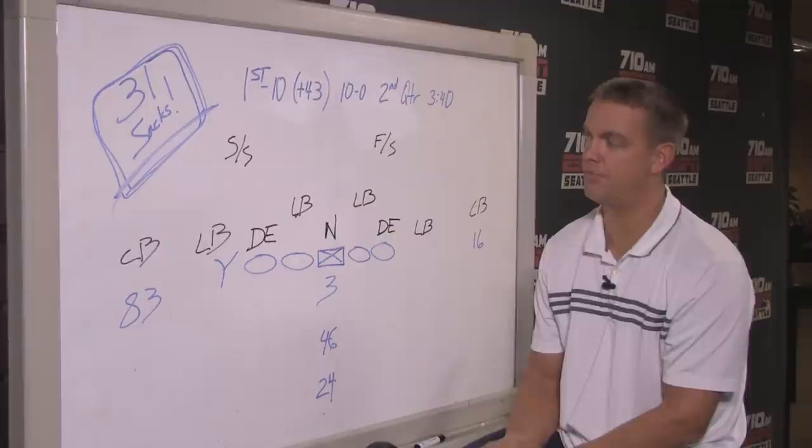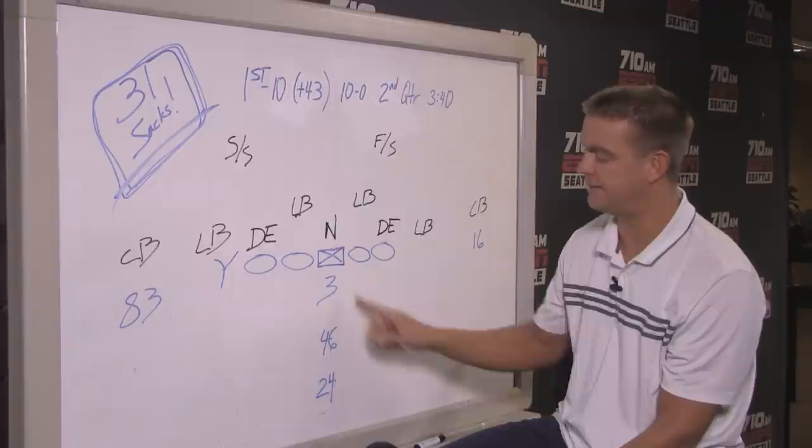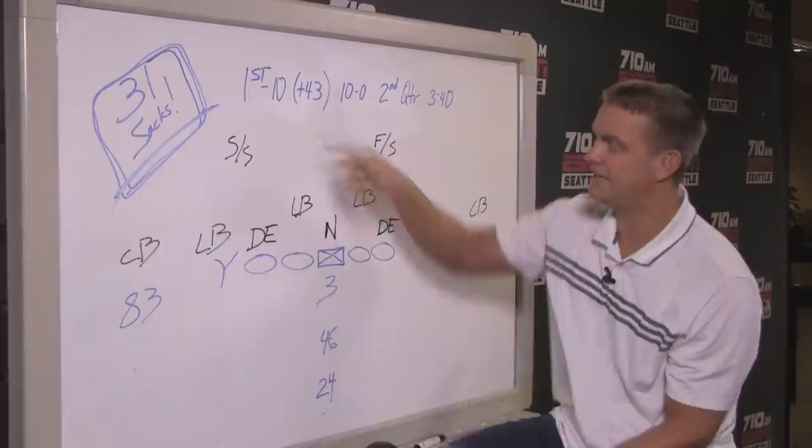First and 10 at the 43, this followed Doug Baldwin, a couple really good throws from Russell. Jermaine Curse on a little seam route, Doug Baldwin on a check down, the face mask penalty, it's set up first and 10 at the 43, already up 10-0, 3:40 in the second quarter.